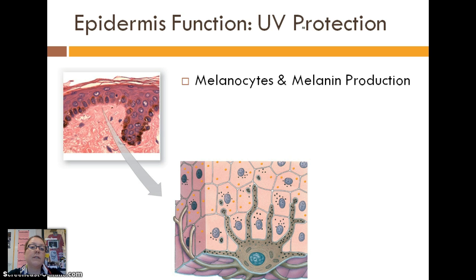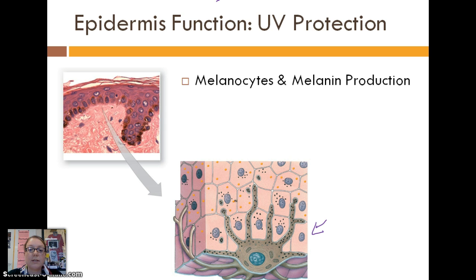Another function of the epidermis is UV protection. In the same area where keratinocytes develop, there is another type of cell called the melanocyte — shown here in brown. These melanocytes produce a pigment known as melanin. The more melanin you have in your skin cells, the darker the skin.